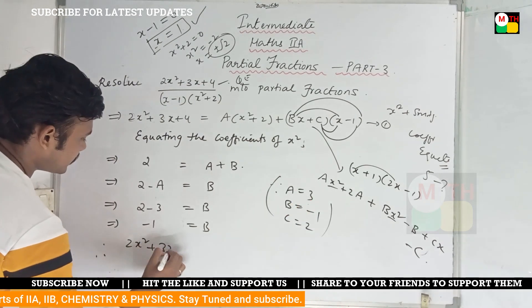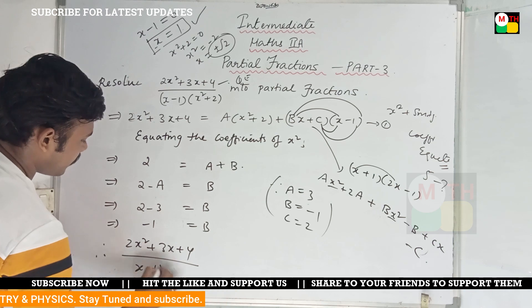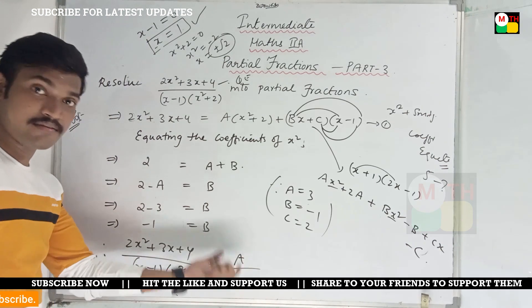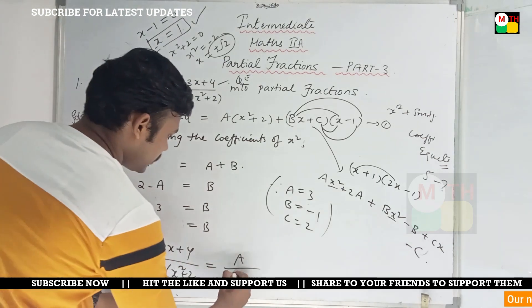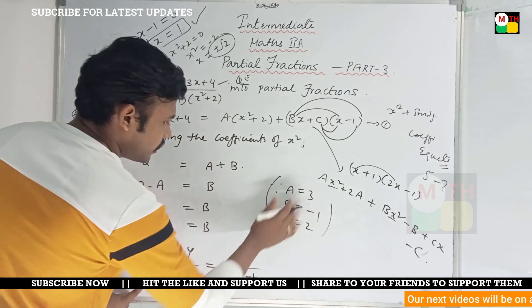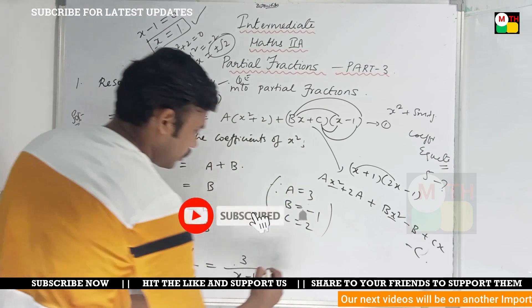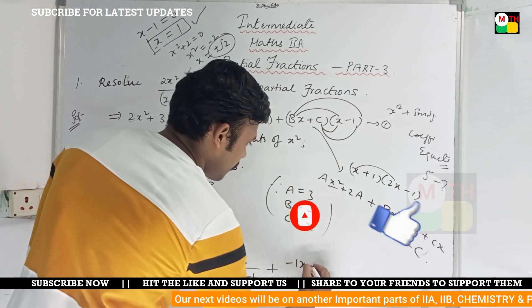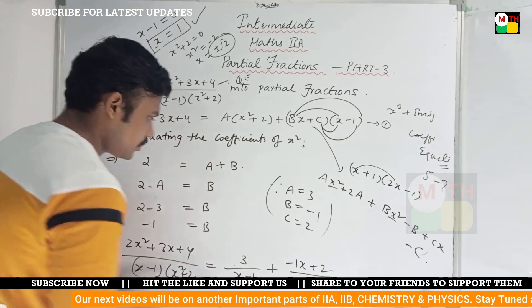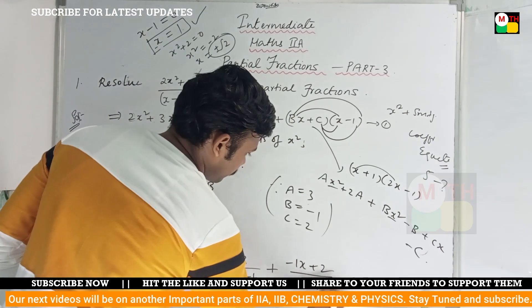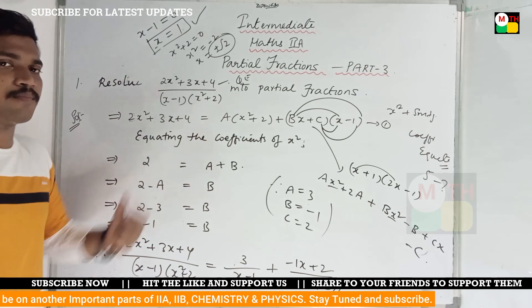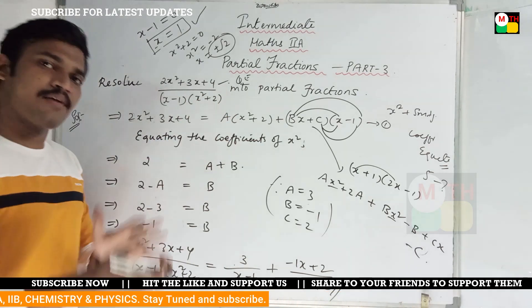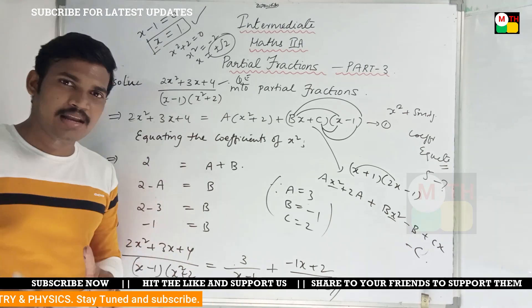So the question 2x squared plus 3x plus 4 divided by x minus 1 into x squared plus 2 is resolved. This is the answer for the question.